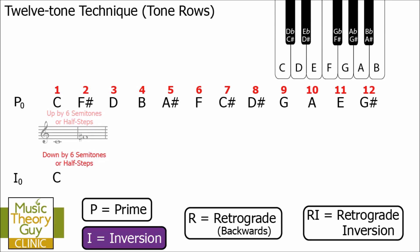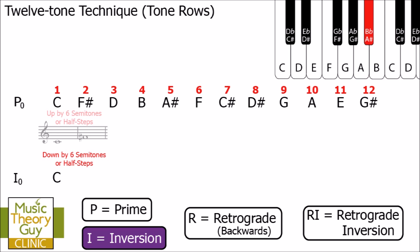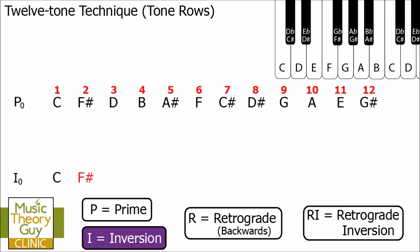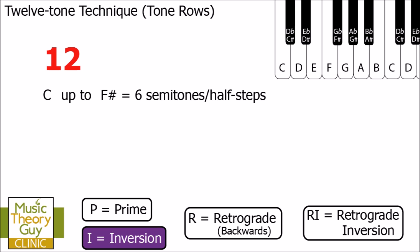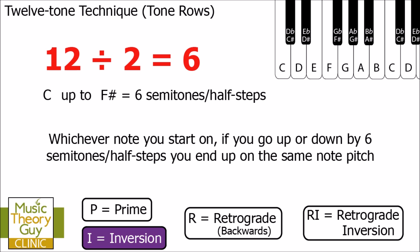We do the opposite: we go down by six semitones or half steps. Here's C on the keyboard, going down by six: one, two, three, four, five, six — and we end up on F sharp. Don't be put off that the first two notes of I0 are exactly the same as P0. It's simple mathematics: the distance from C to F sharp is six semitones, which is half of twelve. Whichever direction you go, you end up on the same note.